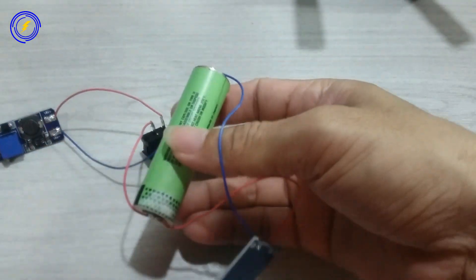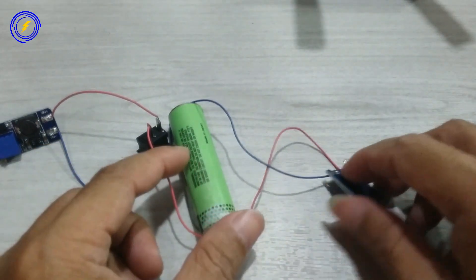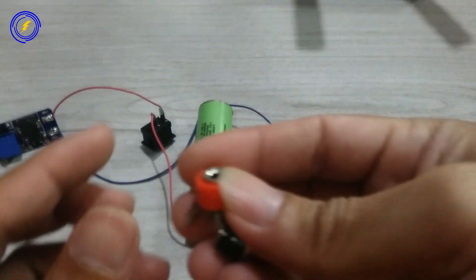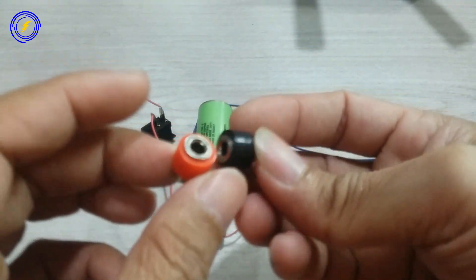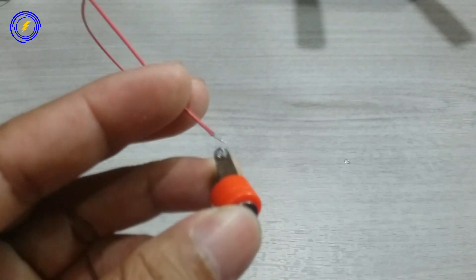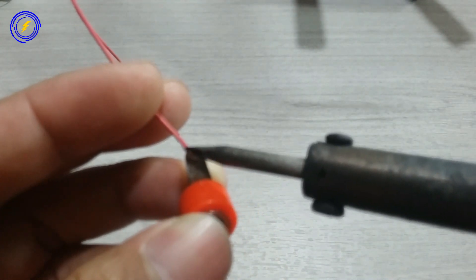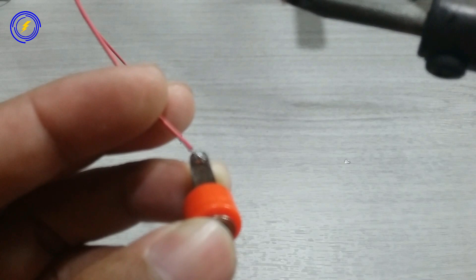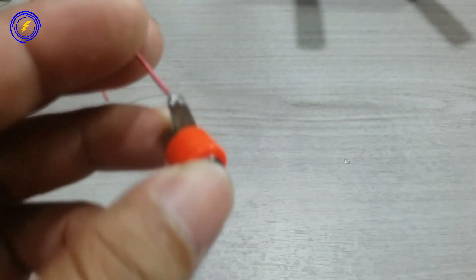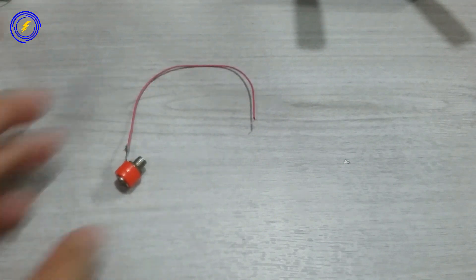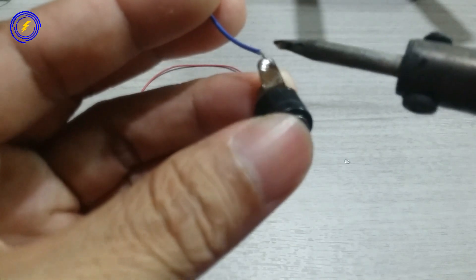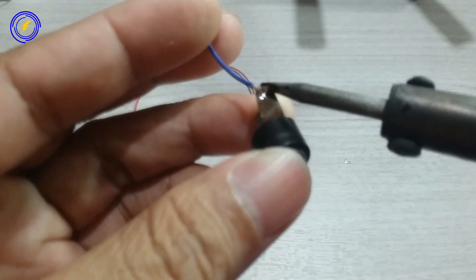Seperti ini jadinya. Saya sudah menyiapkan lagi untuk soket banana. Kita hubungkan sebuah kabel untuk soketnya satu-satu. Untuk warna hitam kita hubungkan juga sebuah kabel.